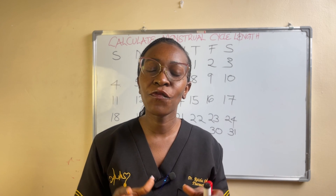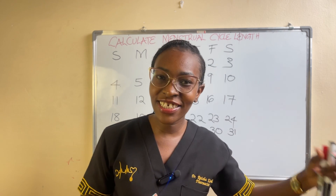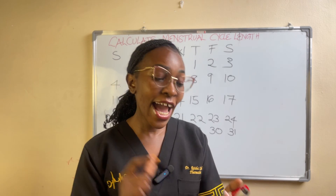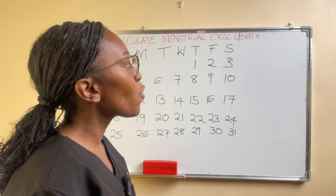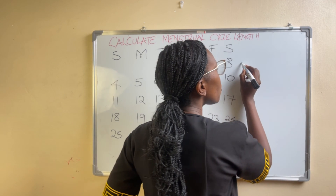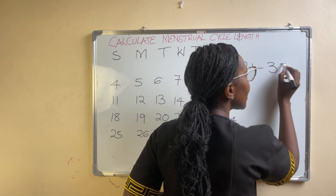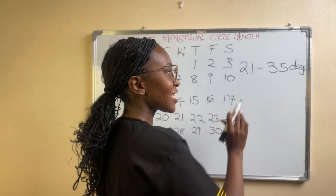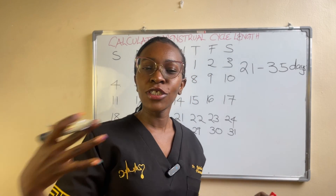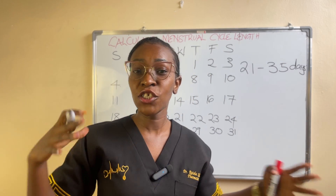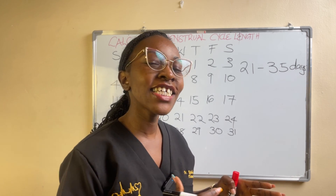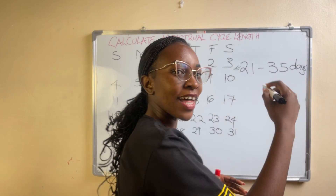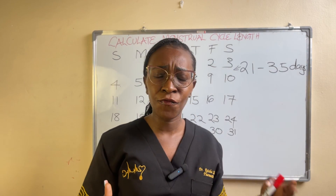Menstrual cycle length is the number of days in between the first day you receive your period to the last day before you receive your next period. It is normal for women to have their menstrual cycle length in between 21 to 35 days. So if your cycle length is 21, 22, 25, 27, or 32 days, that is normal. But if it is less than 21 days or more than 35 days — for example, if you receive your period after every 40 days — then that is not normal.